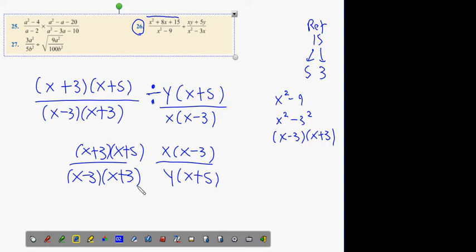And then on this one, we're going to have x plus 3, x plus 5. And then on the bottom here, we're going to have x minus 3, x plus 3. Now, what can I cancel? X plus 3 will cancel with the other x plus 3. Anything else? X plus 5 cancels with x plus 5 down there.